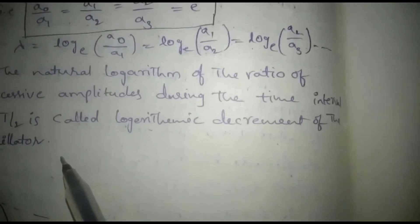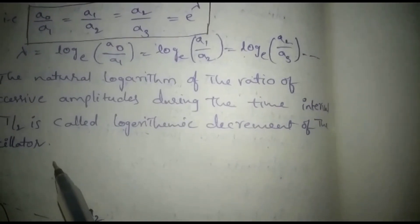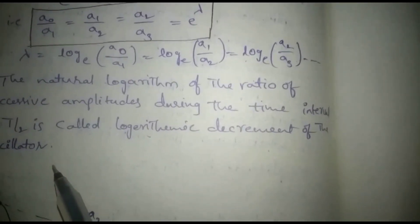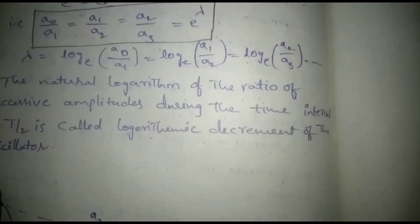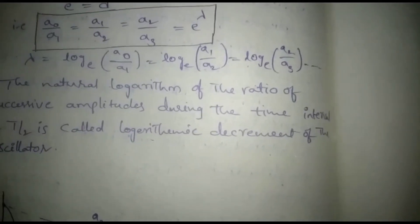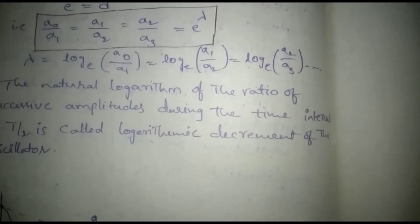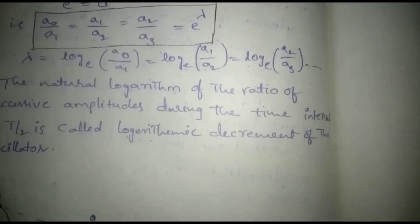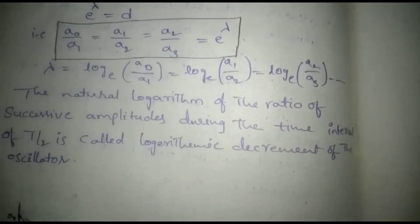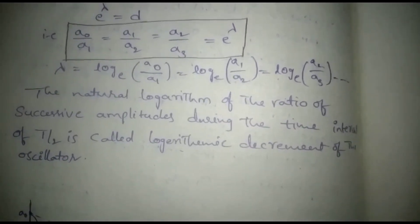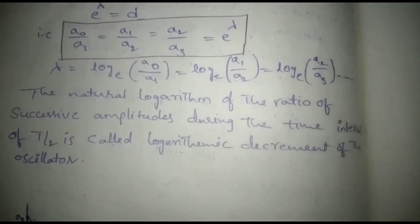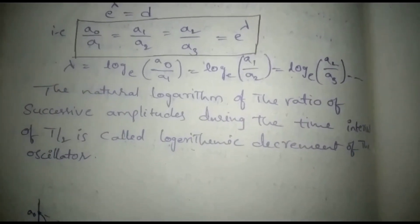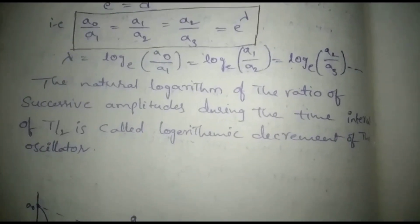The natural logarithm of the ratio of two successive amplitudes during the time interval T/2 is called the logarithmic decrement of the oscillator. Thanks for watching. Please like, share, and comment, and subscribe to the channel and hit the bell icon for more updated videos.